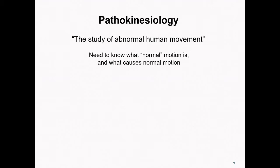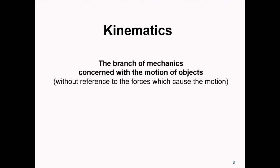A common approach in the study of pathokinesiology — that is, the study of abnormal human movement — has been to first ask: what does normal look like? Similarly, in this class, when we look at gait for example, we will start by considering the characteristics of the gait of young healthy adults before moving on to considering pathological gait. So let's get started reviewing some of the foundational concepts in biomechanics.